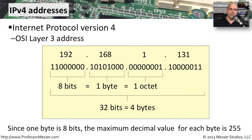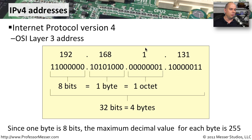An IPv4 address, which stands for IP version 4, is an OSI Layer 3 address. It's usually represented as a decimal address — here's a good example: 192.168.1.131. Now our computers, of course, don't read things in decimal. They read binary.